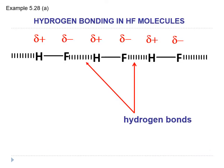Let's look at Example 5.28, where you have to draw and show hydrogen bonding in hydrogen fluoride molecules. Let's draw HF, a linear compound, and next to it is another linear compound of HF. Between F and H, there would be hydrogen bonding. Note this down in your course book, page 153.